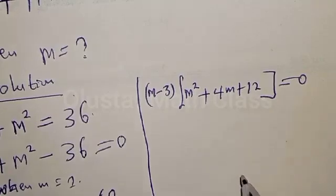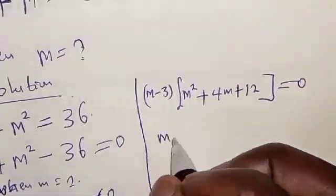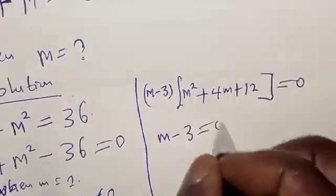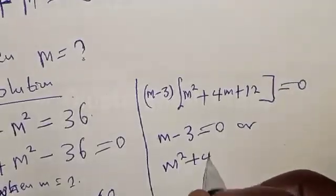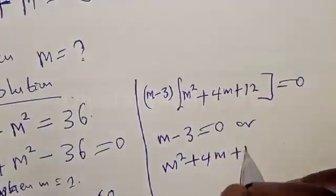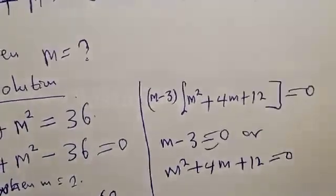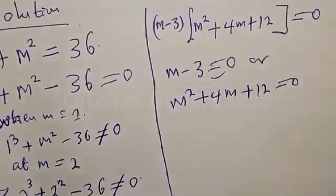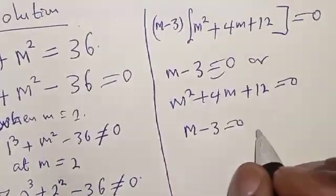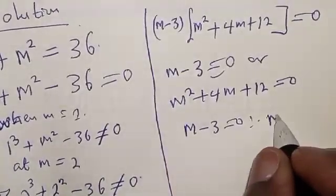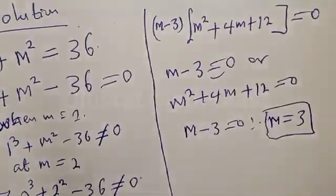We now have two cases. The first case is m minus 3 equals 0, or m squared plus 4m plus 12 equals 0. From the first case, m minus 3 equals 0, therefore m equals 3. That is one of the answers.